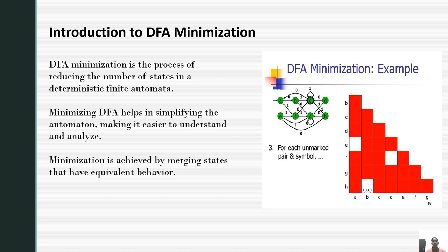Minimization is achieved by merging states that have equivalent behavior. In automata theory, DFA minimization is the task of transforming a given deterministic automata into an equivalent DFA that has minimum number of states. Here, two DFAs are called equivalent if they recognize the same regular language.